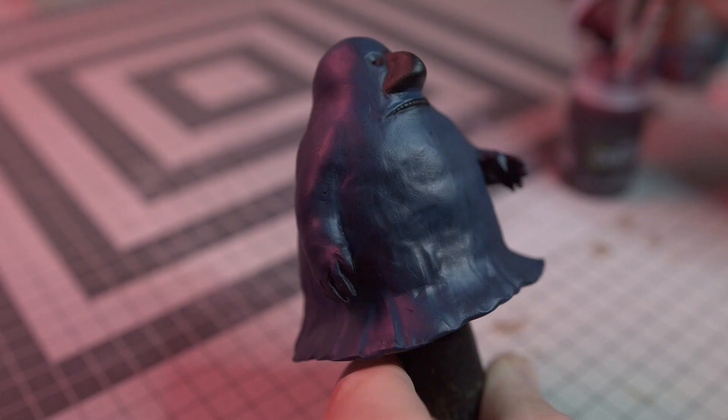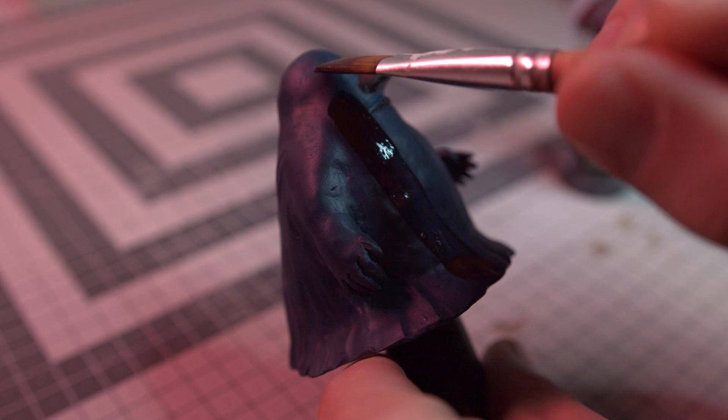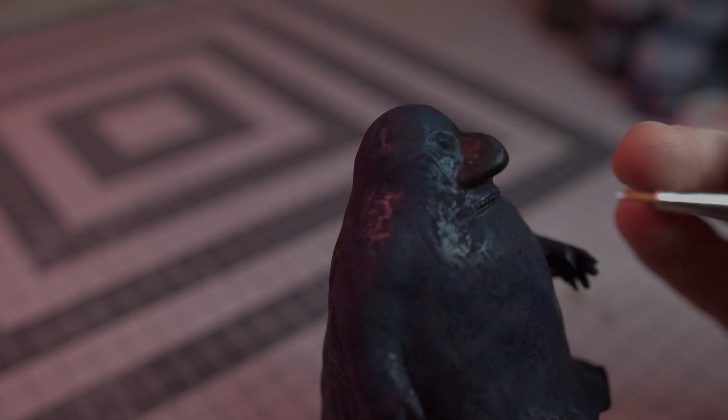I then paint on a heavy crimson wash, then dab a tissue to remove the wash from the high spots on the model. The tissue left behind an interesting texture I did not intend, so a lucky mistake.